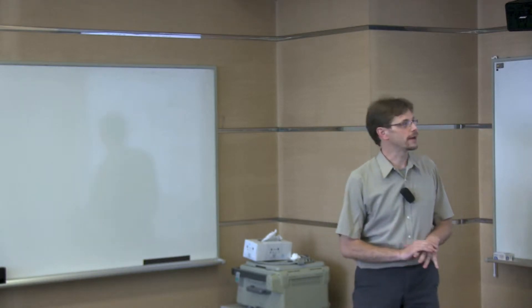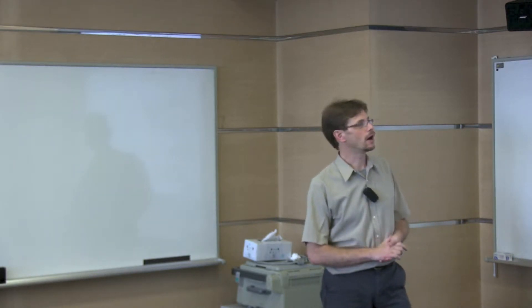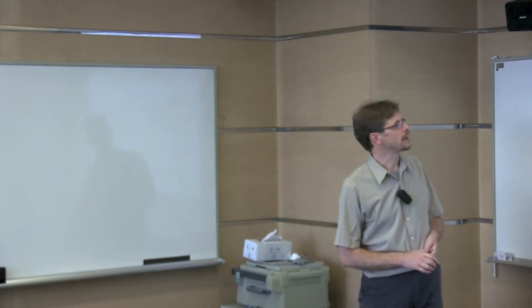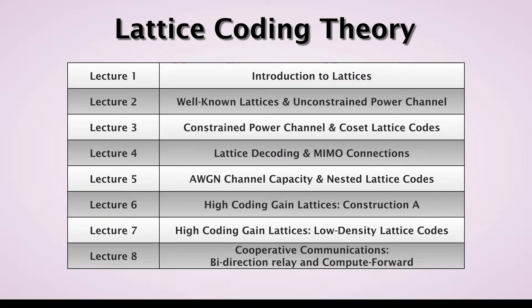So this is an outline, the current plan, of the lattice coding theory in eight lectures. Today is lecture one and that's introduction to lattices. In the next lecture I'm going to talk about well-known lattices and connections between coding theory. There is a lattice called the E8 lattice which is strongly connected to the extended Hamming code and their application to the unconstrained power channel.